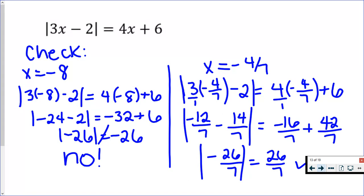But negative 4 over 7 does work. I know people hate fractions, but what I did was I changed 2 into 14 over 7 and I changed 6 into 42 over 7, so that I was able to add my numerators and combine those fractions. You can see that we have the absolute value of negative 26 over 7 on one side, and that does indeed equal positive 26 over 7. So our only answer is negative 4 over 7.